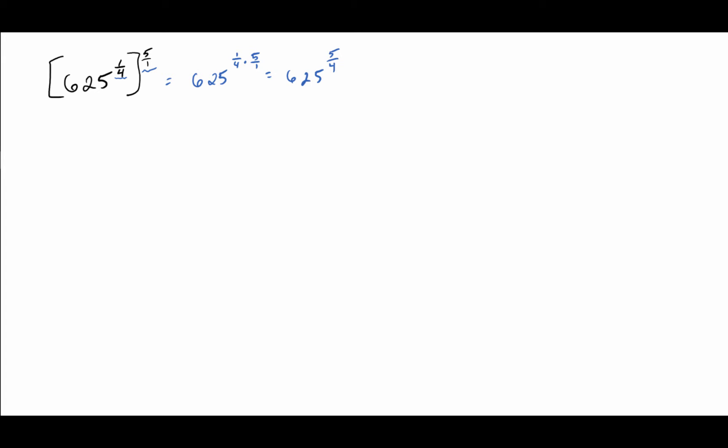I'm going to rewrite a similar problem that we're going to see is actually the same number in a moment here. So 625 to the 5th power raised to the 1/4 power. Again I'm going to write that 5 as 5 over 1, and then we'll see that when we multiply those two things together, we once again get 625 to the 5 over 4 power.